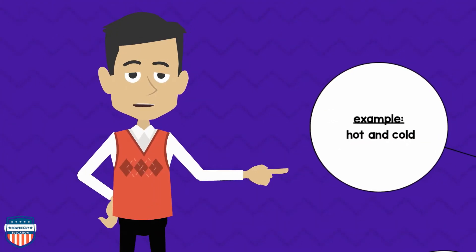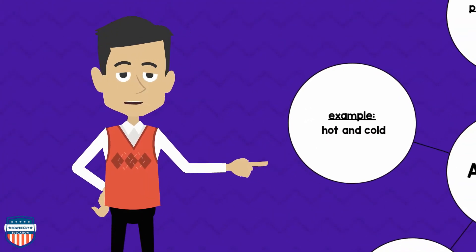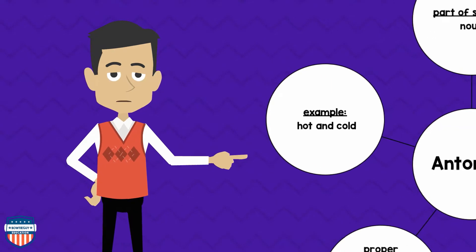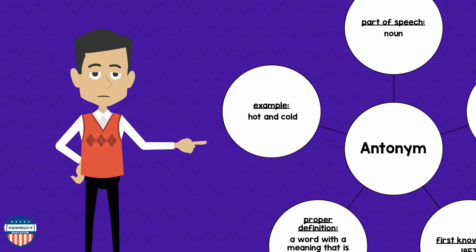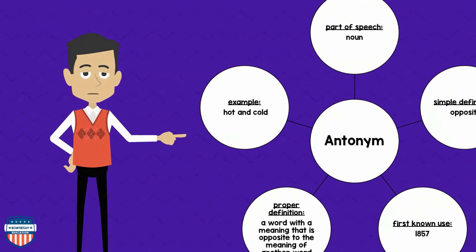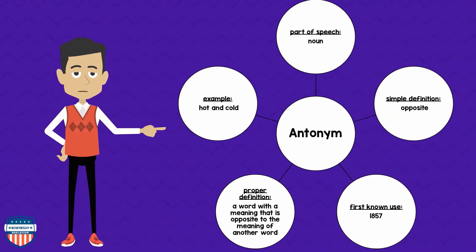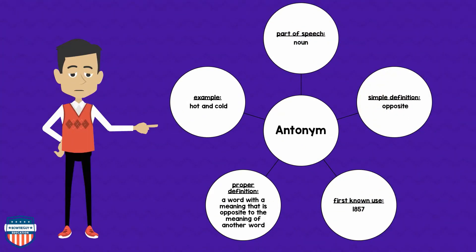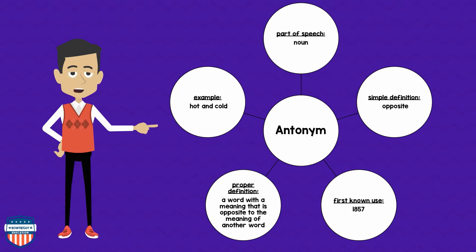Now that we've reviewed synonyms, let's review antonyms. What exactly is an antonym? The word antonym is a noun. The simple definition of antonym means opposite. Its first known use was in 1857. It's a word with a meaning that is opposite to the meaning of another word. An example is hot and cold.